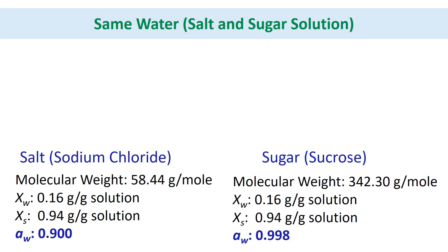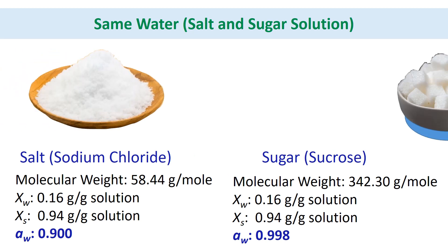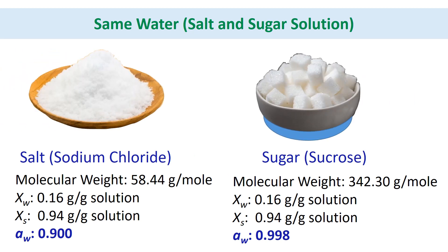Third, same water content with different water activity. In this example, we could observe the same water content in salt and sugar — that is, 16% moisture content — causes different water activity, that is 0.900 and 0.998.